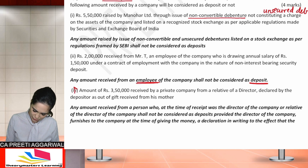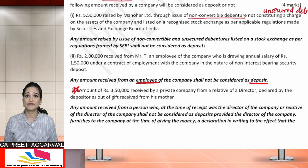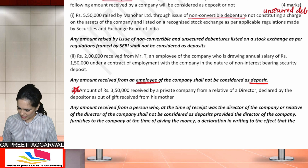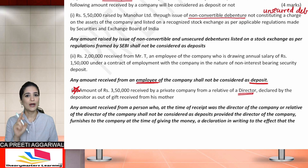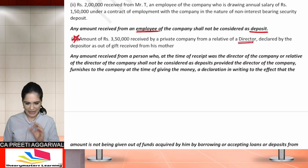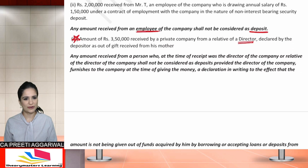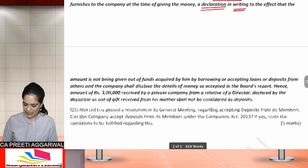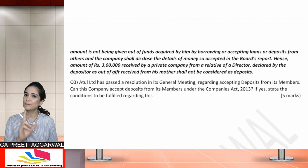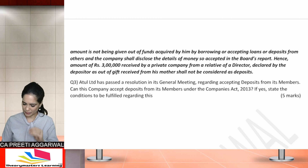An amount of ₹3,50,000 was received by a private company from a relative of a director, declared by the depositor as out of a gift received from his mother. Any money received from a director is not considered as a deposit, but the director must make a declaration that the money is from his own funds and not borrowed funds. Any money received from a director or relative will not be considered as deposit, provided the director furnishes a declaration in writing to that effect.